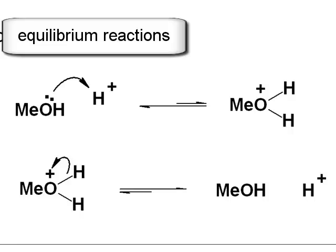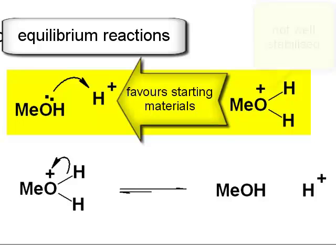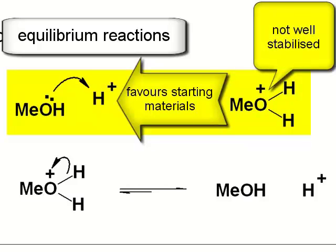For example, the protonation of methanol goes only to a small extent to the protonated form, and that equilibrium lies in the favor of the starting materials, because the charge is not well stabilized on the oxygen atom, electronegative atom but carrying a positive charge, not especially good.